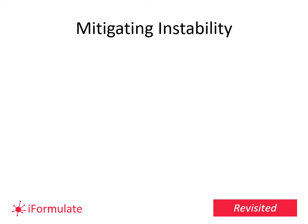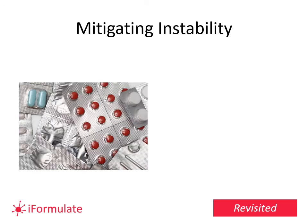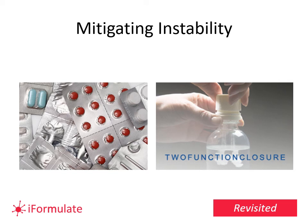Formulators can also cheat — or to use a more technical term, mitigate. If something is causing instability, you can often package around that. That's why blister packs exist — if something has an issue with humidity, air, oxygen, or even light, put it in a blister pack or a brown bottle. There was also an example relevant to the drinks industry where a company in Sweden developed a two-function closure where the solid powder was stored in the top of the cap, and when you twisted to release it was dropped into the liquid, giving you a freshly made drink. The stability issue between the solid powder and the liquid was mitigated by packaging.